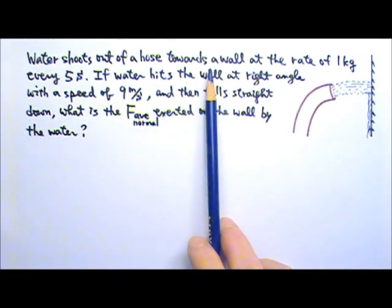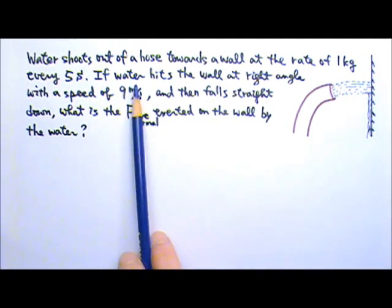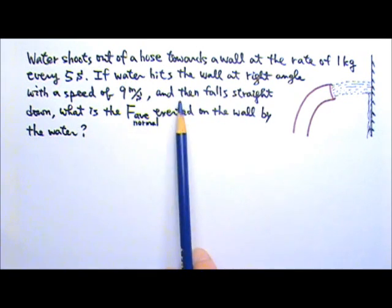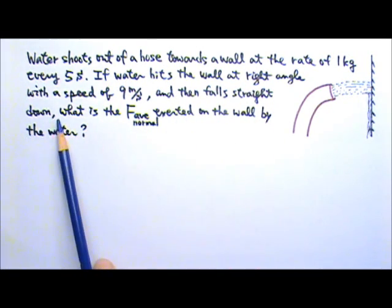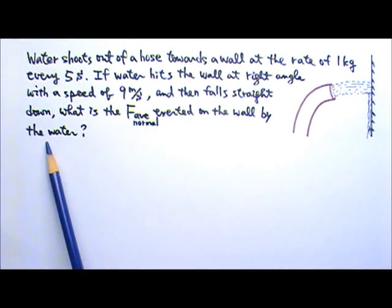Water shoots out of a hose towards a wall at the rate of 1 kg every 5 seconds. If water hits the wall at right angle with a speed of 9 meters per second and then falls straight down, what is the average normal force exerted on the wall by the water?